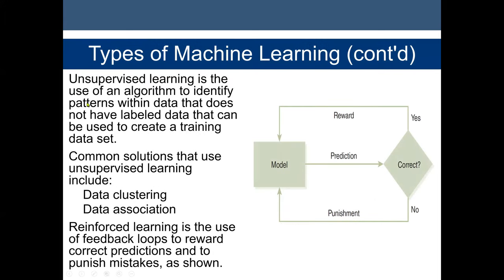Unsupervised learning is the use of an algorithm to identify patterns within data that does not have a labeled target variable. We don't know the outcome, so our main goal is to find similarity between the data and then separate it into groups. Common solutions that use unsupervised learning include data clustering and data association.